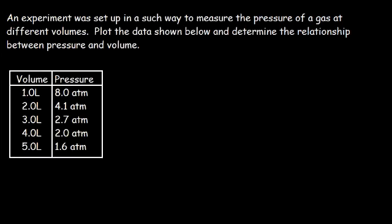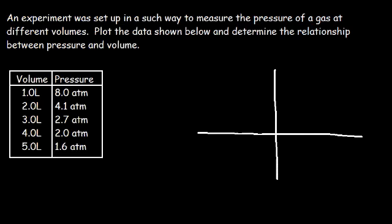Here's another problem. Feel free to pause the video and see if you can work out this problem, then unpause it to check the solutions. An experiment was set up to measure the pressure of a gas at different volumes. Plot the data shown below and determine the relationship between pressure and volume. Which one is the dependent variable and which one is the independent variable? Notice that we want to measure the pressure — the quantity you want to measure is typically the dependent variable. So pressure is associated with the y-variable.